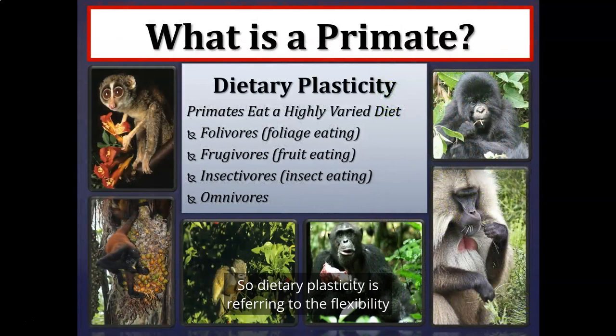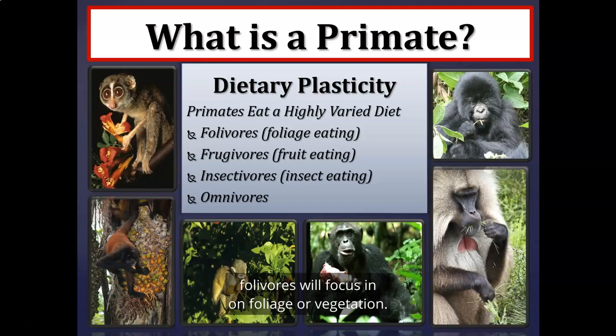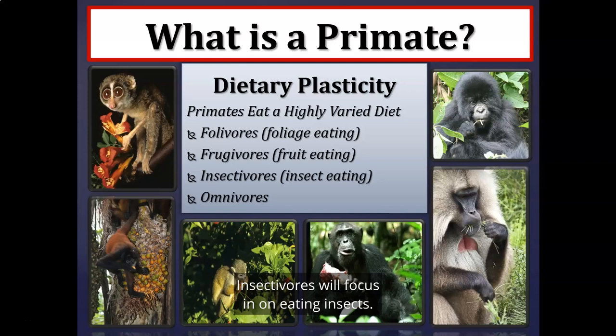Dietary plasticity refers to the flexibility in a primate's diet. Primates in general eat a very varied diet. Folivores focus in on foliage or vegetation, frugivores on predominantly fruits, insectivores on eating insects, and omnivores essentially eat a variety of all of those things — foliage, fruit, insects, nuts, and even a little bit of meat.